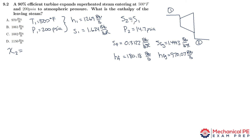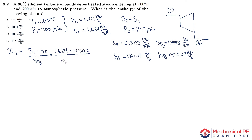This is a temporary assumption since the turbine is only 90% efficient. The quality at state 2 ideal equals (s2 minus sf) over sfg, which is (1.624 minus 0.3122) divided by 1.4443, giving us a quality of 0.908.